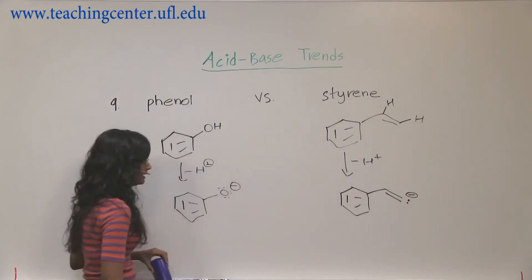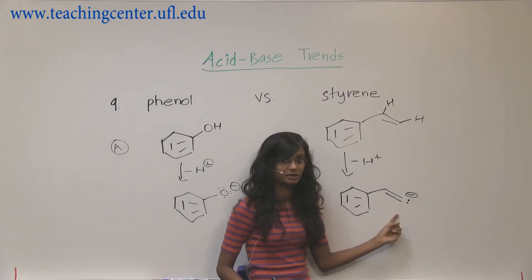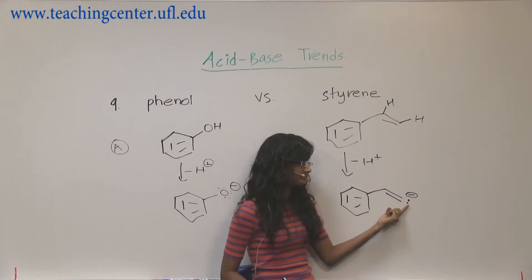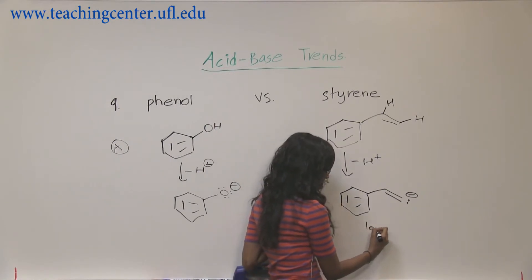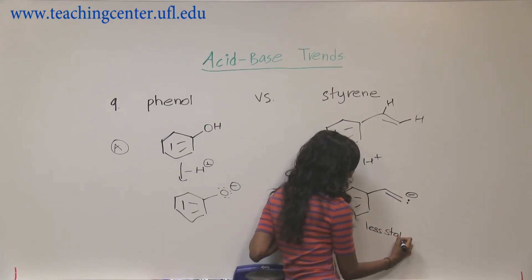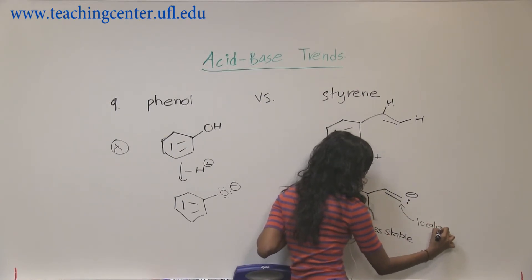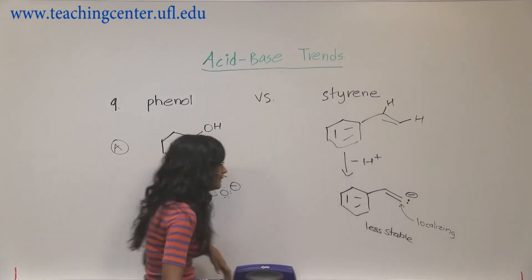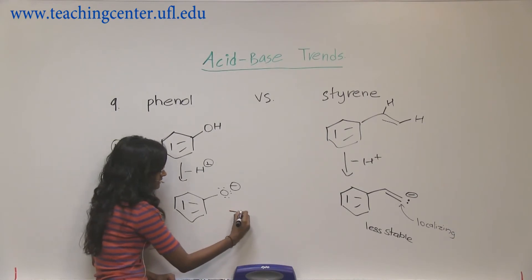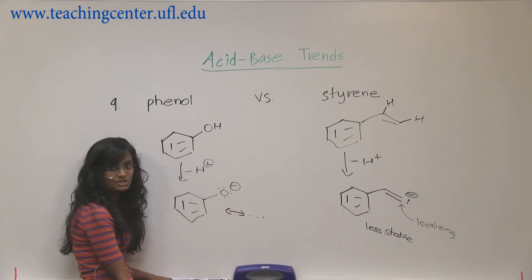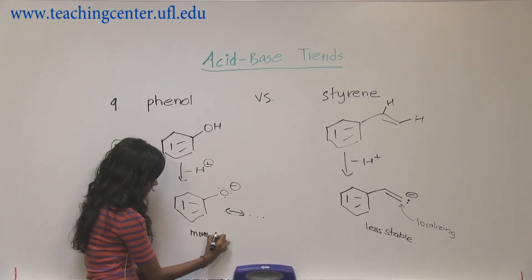This styrene conjugate base looks like a messy structure because you have a double bond and a negative charge that are localizing — so this is less stable because the charge is localized. That means phenol's conjugate base has to be more stable. We've learned that it has three other resonance structures, so it is actually very, very stable.